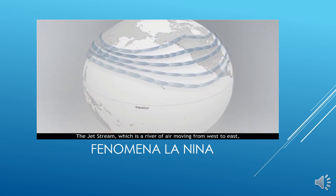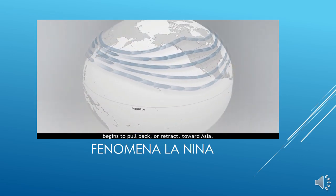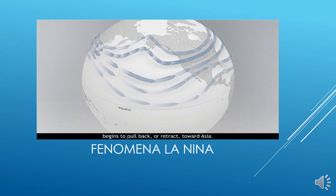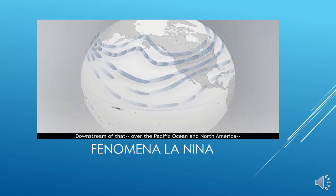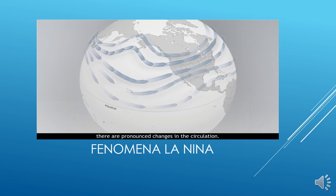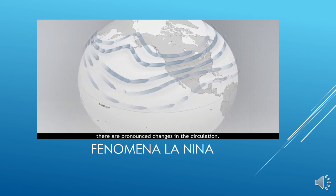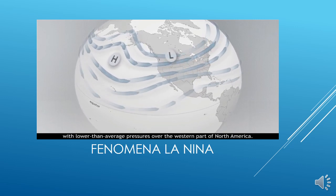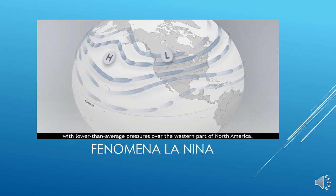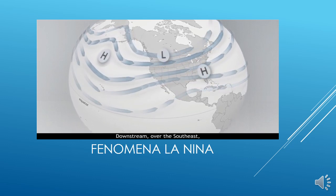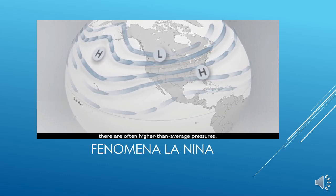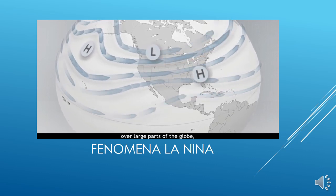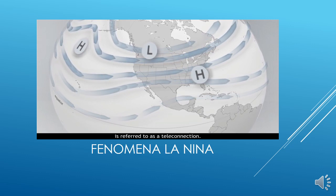The jet stream, which is a river of air moving from west to east, begins to pull back, or retract toward Asia. Downstream of that, over the Pacific Ocean in North America, there are pronounced changes in the circulation. Over the Gulf of Alaska, there tends to be higher-than-average pressures, with lower-than-average pressures over the western part of North America. Downstream, over the southeast, there are often higher-than-average pressures. This type of influence, from one region to another over large parts of the globe, is referred to as a teleconnection.